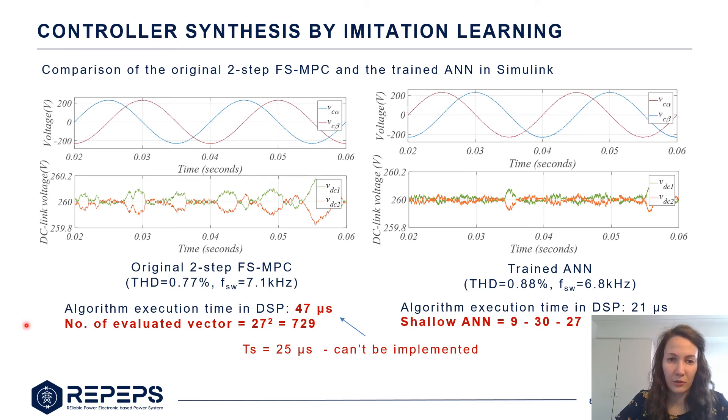Here I can show the comparison of the original two-step MPC and the trained neural network. We can observe the load voltages and the DC link voltages. Regarding the performance we have a quite good match, but when we come to the point of implementing these algorithms in a DSP we notice that it's not possible to implement the two-step MPC without overruns, while for the neural network this was possible.